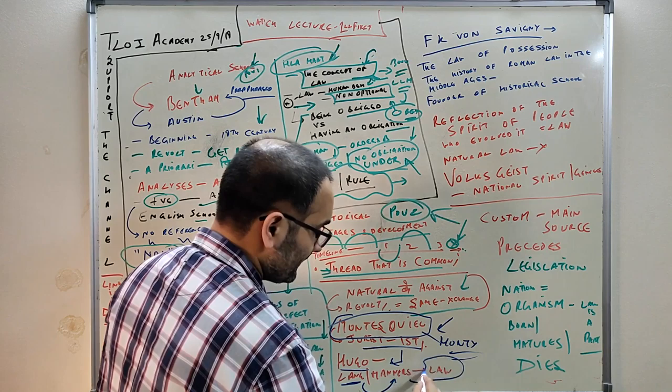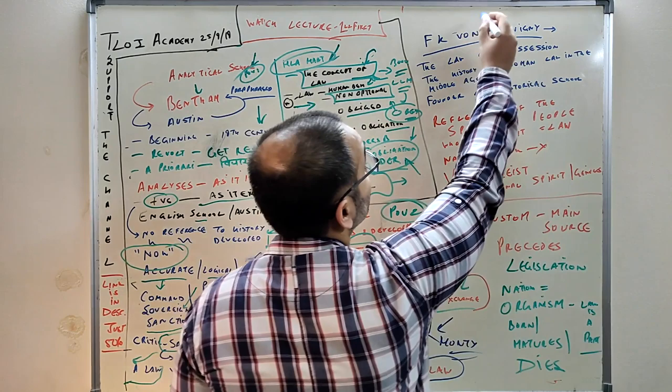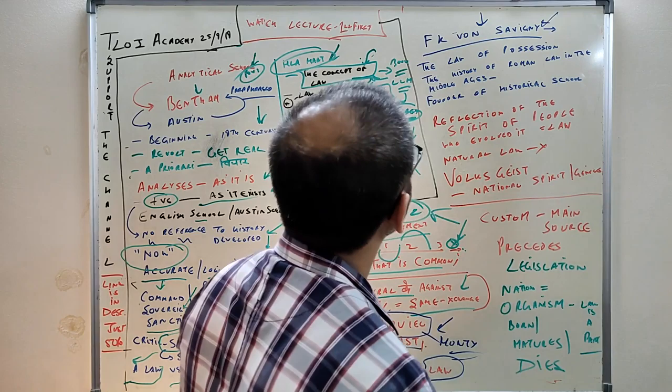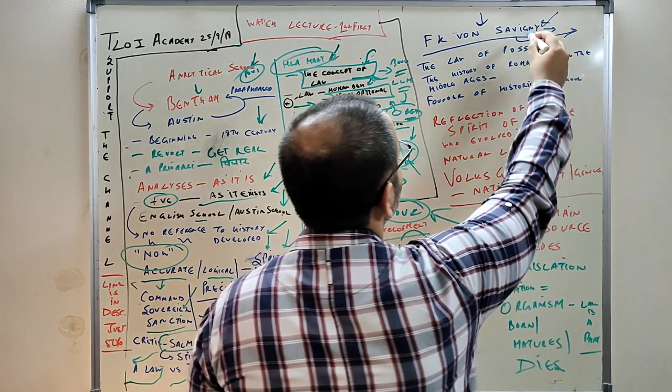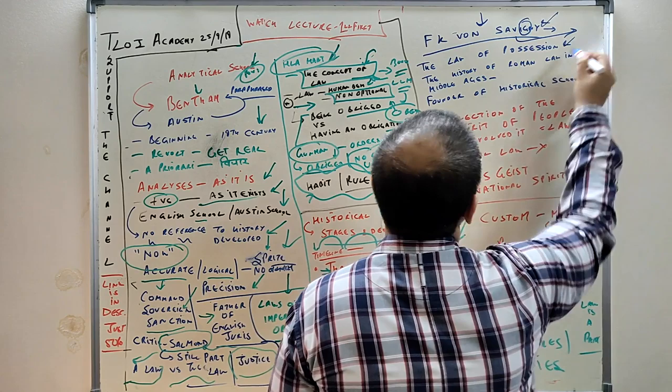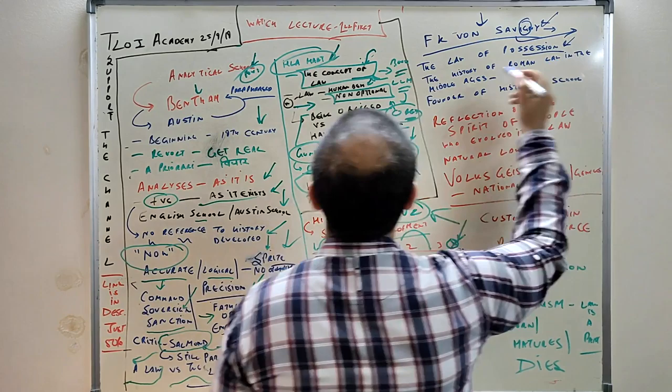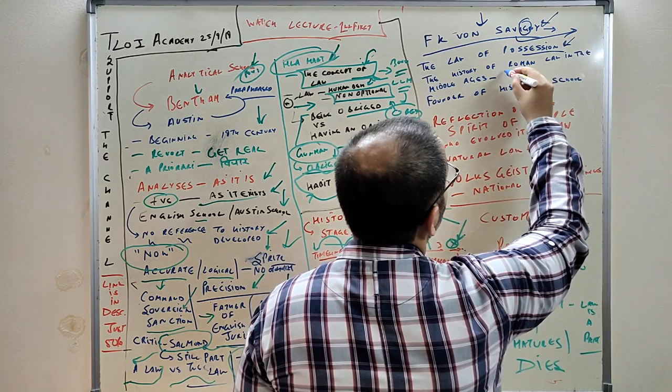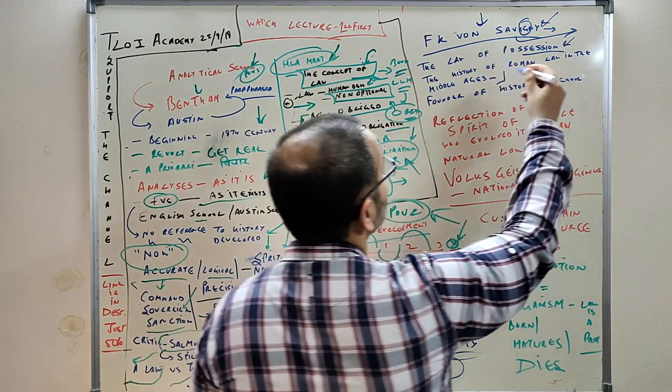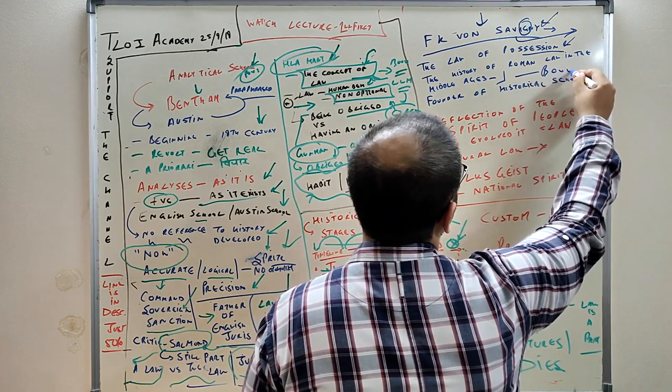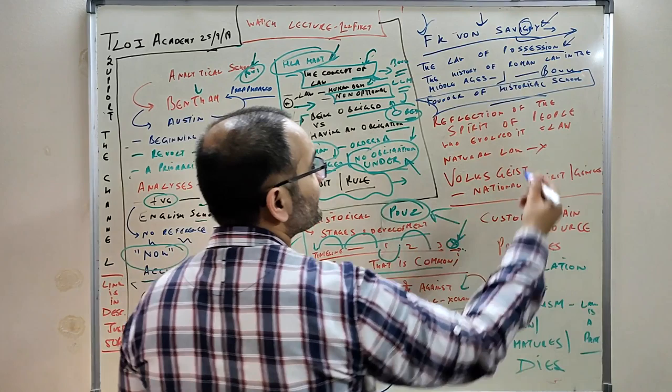Then we come to the father of historical school - remember this name: F.K. von Savigny. My pronunciation may be incorrect. He wrote 'The Law of Possession' - this is LLM question number one. Who wrote 'Concept of Law'? Hart. You should also note Austin's book title, though I don't remember it exactly right now. Another book is 'The History of Roman Law in the Middle Ages'. Savigny was known as the founder of the historical school.